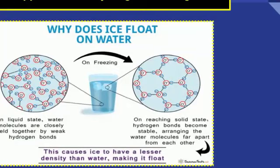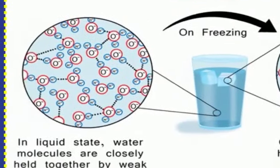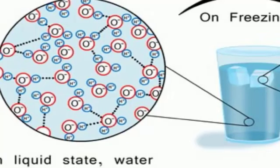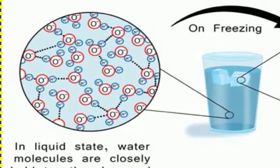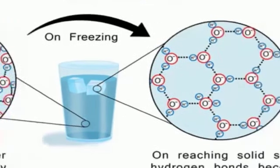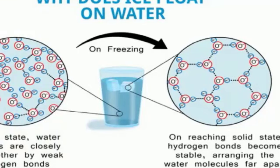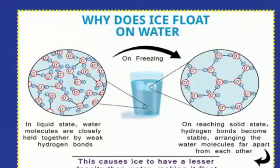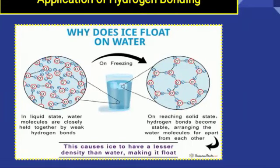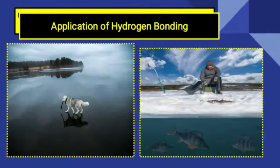Jab water solid state par convert hota hai — is side par aap liquid state mein dekhen — water ke molecules liquid state mein bhi hydrogen bonding bana rahe hote hain, lekin woh banate hain aur todte bhi hain, kyunki water ke molecules continuously movement kar rahe hote hain. But in case of solid state, temperature down hota hai, kinetic energy kam honi shuru ho jati hai, aur natije ke tor par water ke molecules freezing point ki taraf badhte hain to solid state mein convert hone lagte hain, due to the hexagonal ring structure of the water molecules.